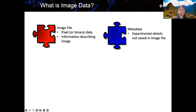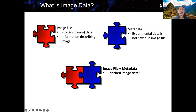There is also metadata, which is an important part of image data. By metadata, I mean experimental details that are not saved in the image file — for example, sample details such as cell line or organism, sample preparation and labelling. This is the type of data where only the scientists who conducted the experiment can provide. When you have an image file along with its metadata, you have enriched image data.